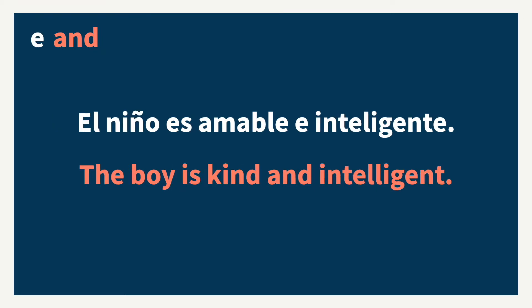The next one is E, just like the vowel. It also means 'and,' and we use this one instead of Y when the word following this conjunction starts with the letter E. For example, el niño es amable e inteligente. The boy is kind and intelligent.